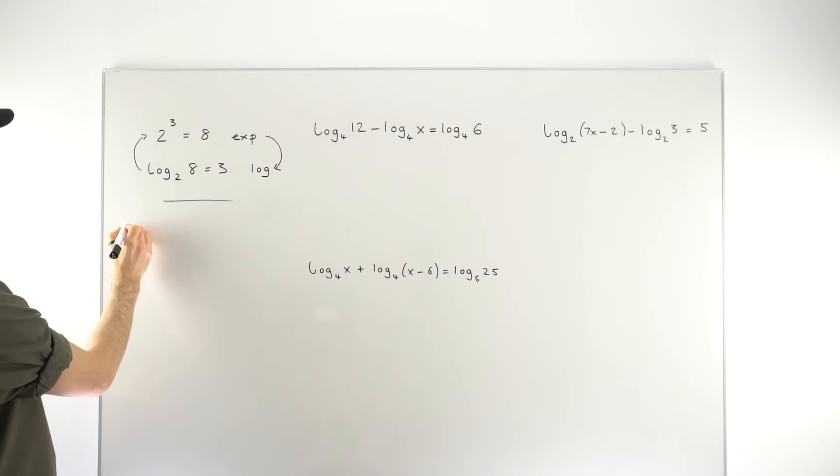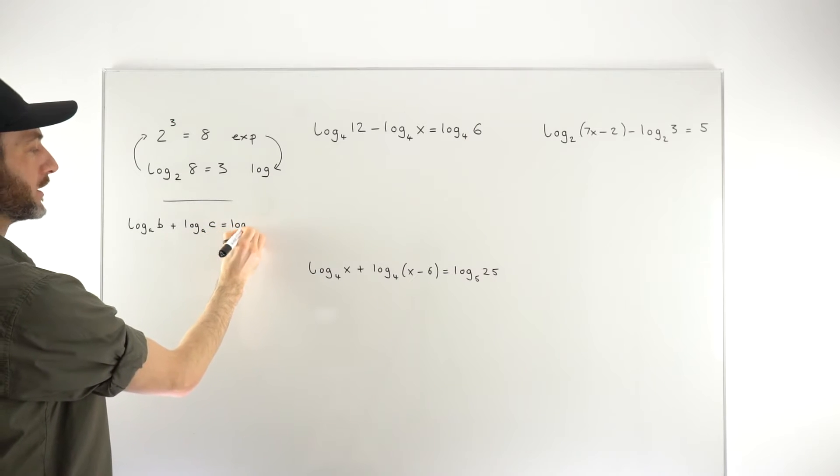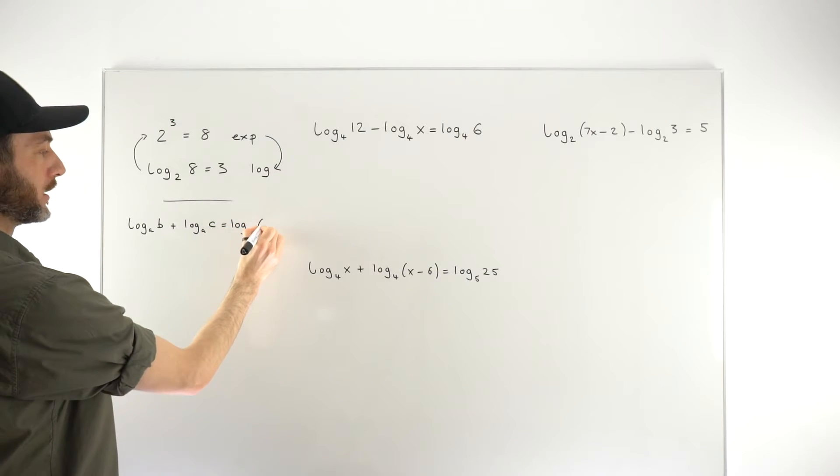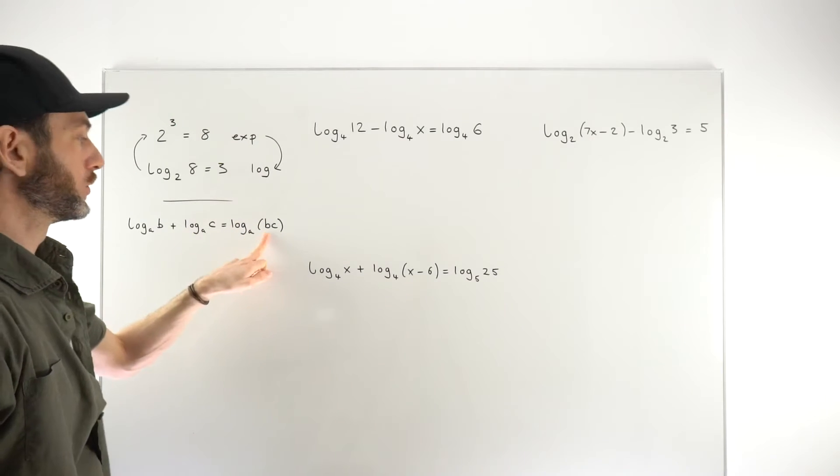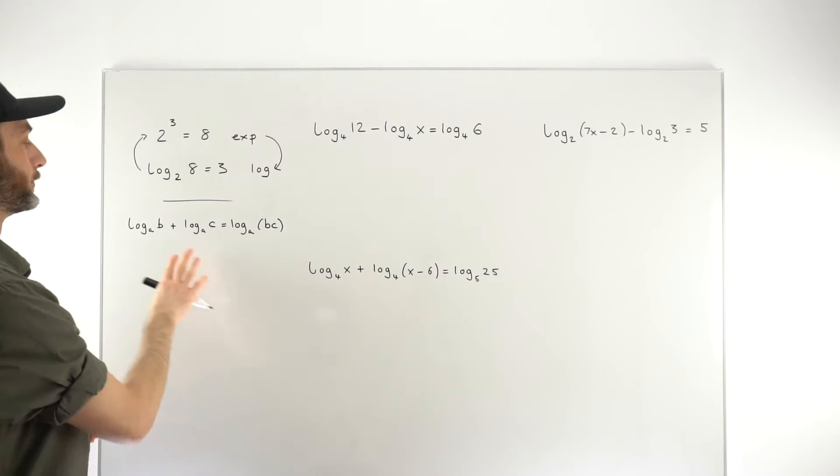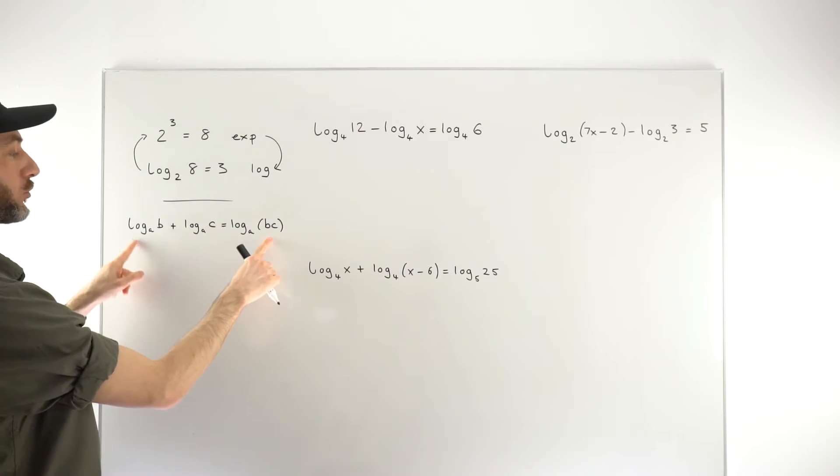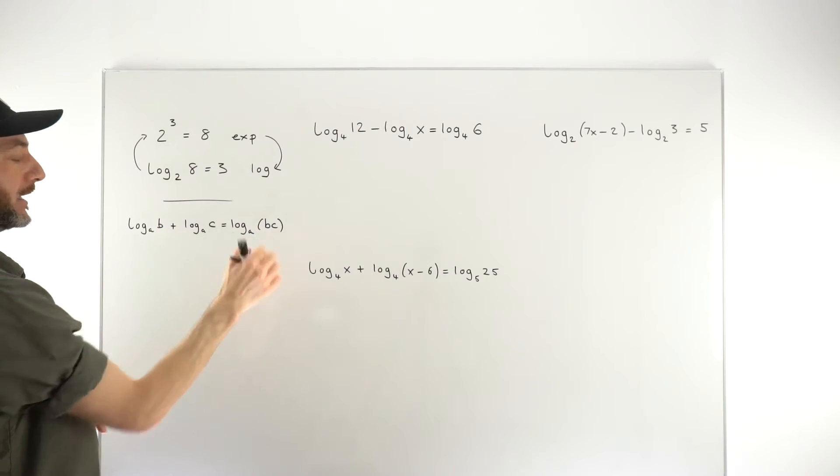The rules themselves tell us how to combine logarithms. So let's say we've got log to base A of B and we're adding to that log to base A of C. In that scenario, we can make it into a single log, log to base A of the product BC. So fairly intuitive, if you're adding, you end up with a product. This comes from the indices rules where there's a connection between adding and a product.